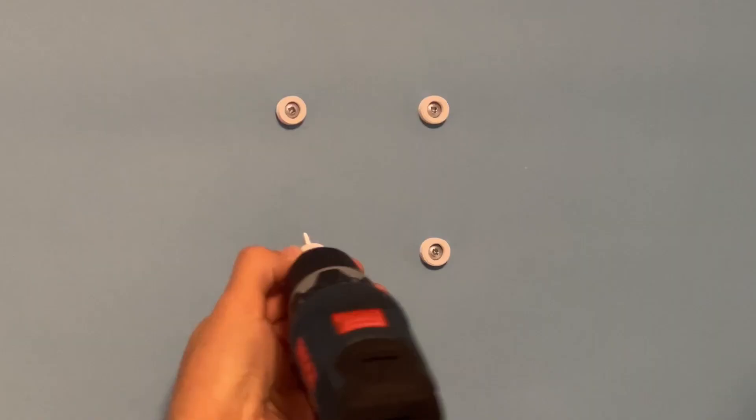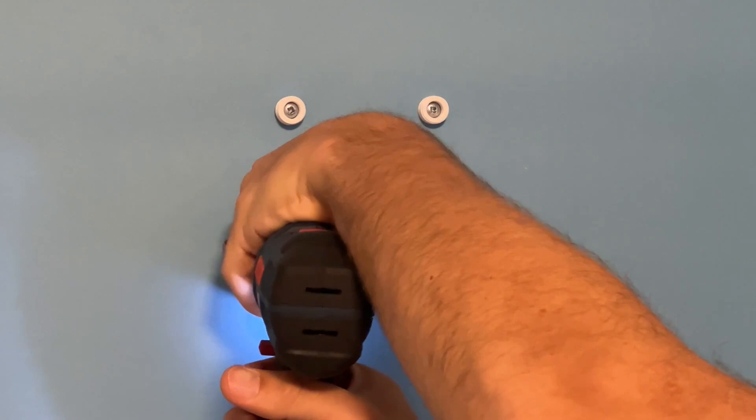Use whatever wall mounting method you would like here. For me I just pre-drilled holes and I'm screwing directly into the drywall. This works well and it's strong enough to hold the escapement up.